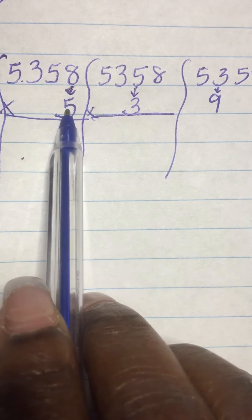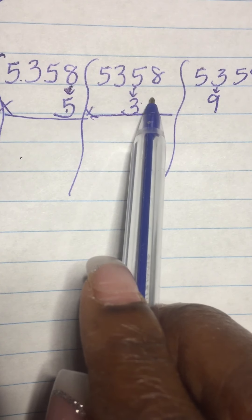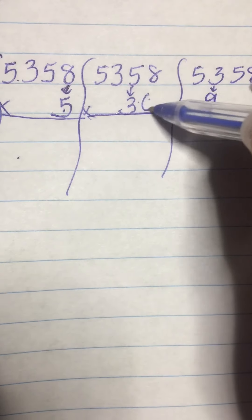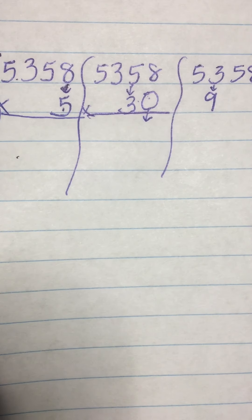Since I already have a five here under the eight, I don't need another number here under the eight. So, I'm just going to write a zero. And a zero is my placeholder. All I do is bring it down.